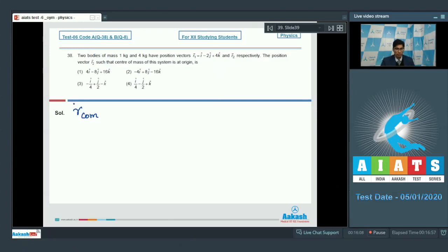Dear students, the position of center of mass can be written as m1 r1 vector plus m2 r2 vector divided by m1 plus m2. For this to be 0, m1 r1 plus m2 r2 should be equal to 0 which means r2 should be equal to minus r1 multiplied by m1 by m2.